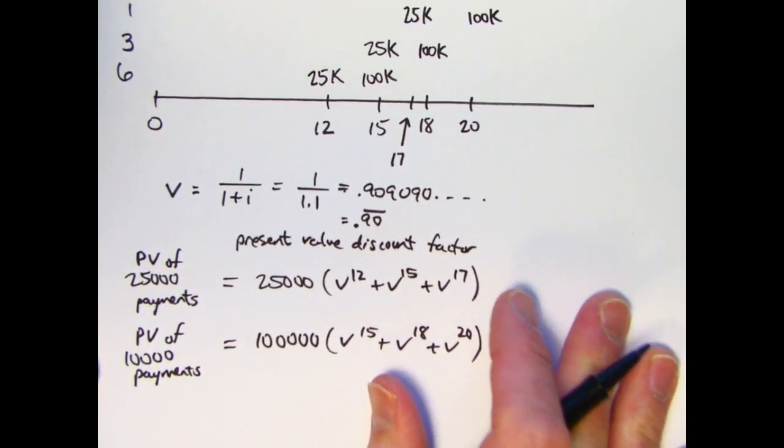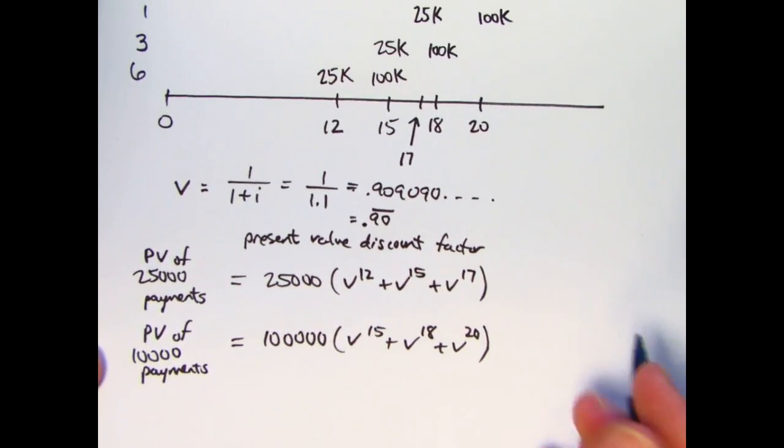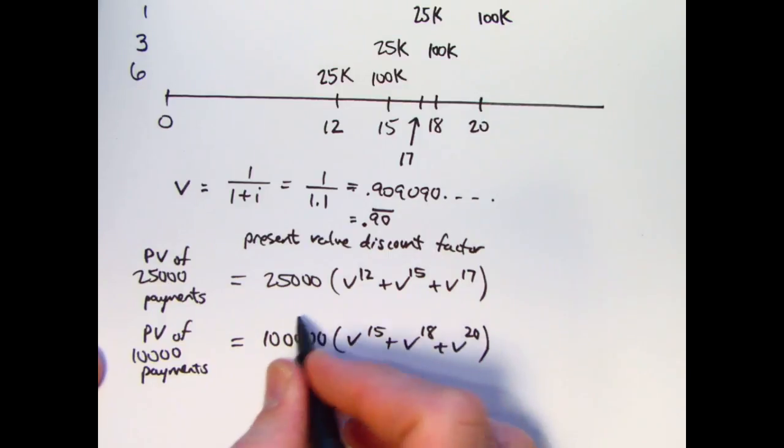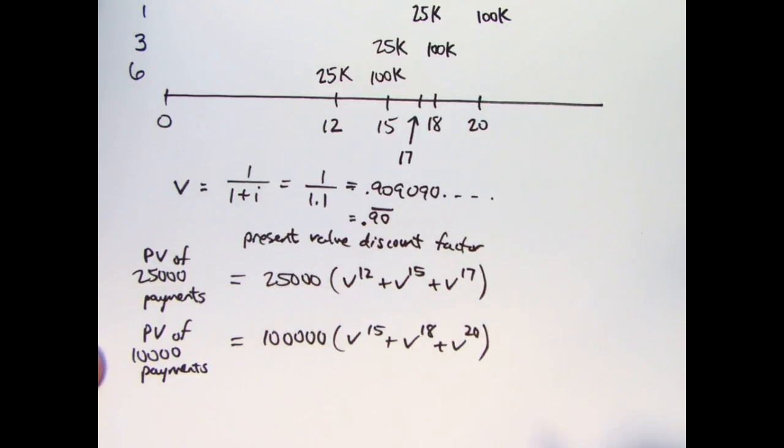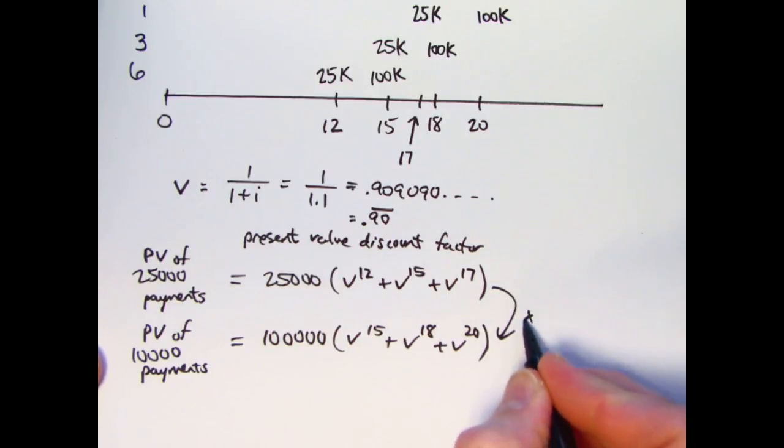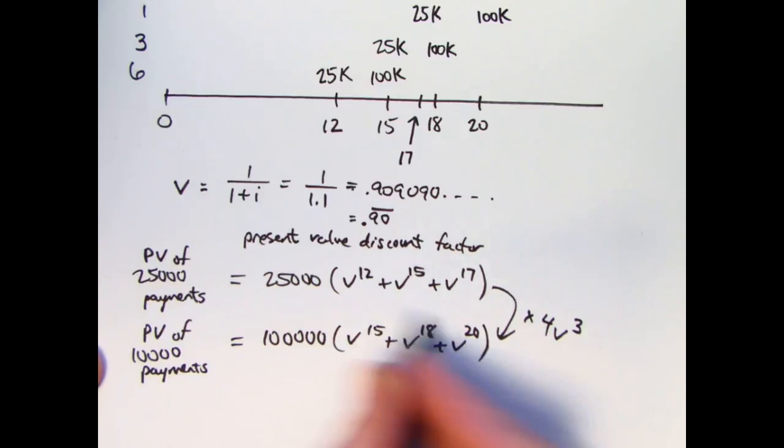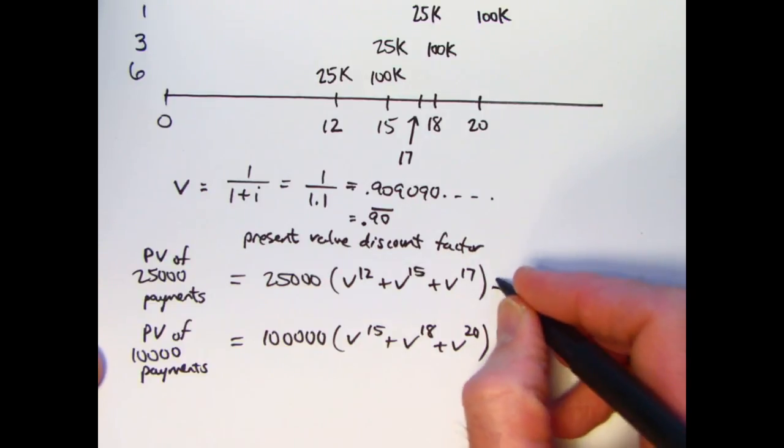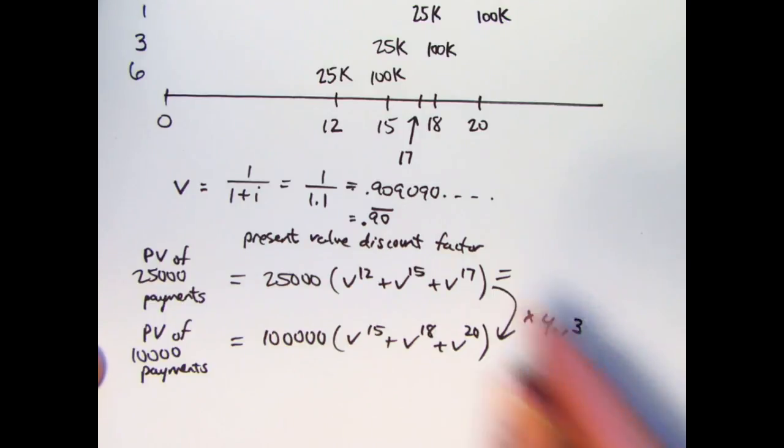One nice thing that I noticed here, and this is something you should look for on your own, is the second quantity right here is 4 times V to the third power times the first quantity. If I multiply the first quantity, this present value, by 4V cubed, that will give me this amount. So I can just find this first, then multiply it by that, and then add the results. All right. So let's go ahead and do that. Let's find this first.